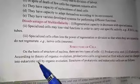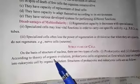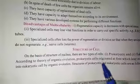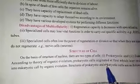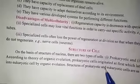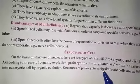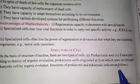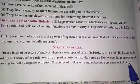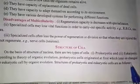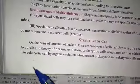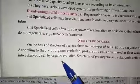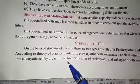According to the theory of organic evolution, prokaryotic cells originated first, which later changed into eukaryotic cells by organic evolution.